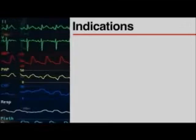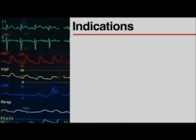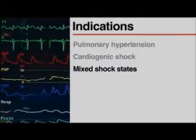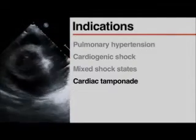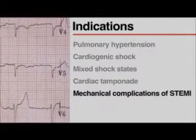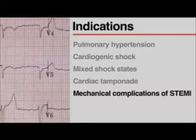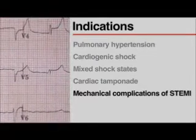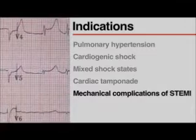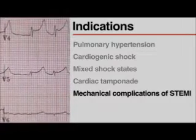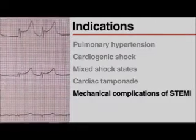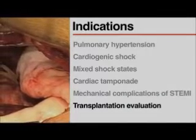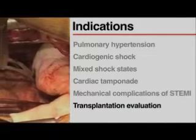Pulmonary artery catheterization can be used to diagnose and manage pulmonary hypertension, cardiogenic shock, mixed shock states, cardiac tamponade, and mechanical complications of ST segment elevation myocardial infarction (STEMI), including right ventricular infarction, ventricular septal rupture, and papillary muscle rupture. It is also part of the standard evaluation of patients being considered for heart or lung transplantation.